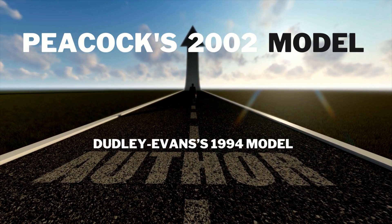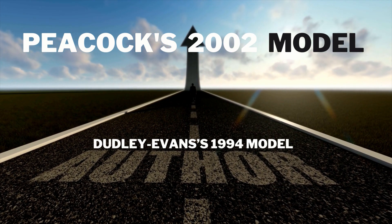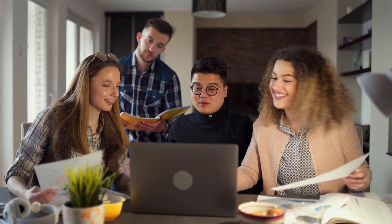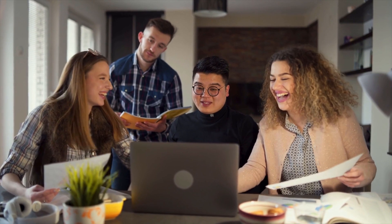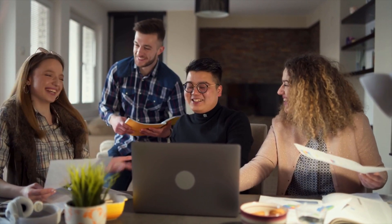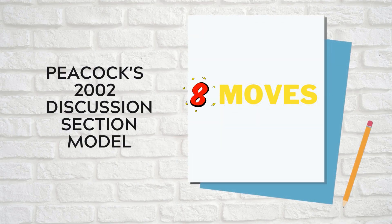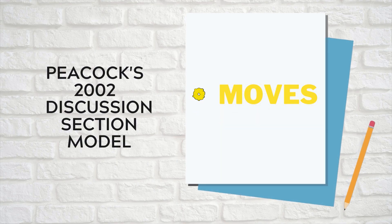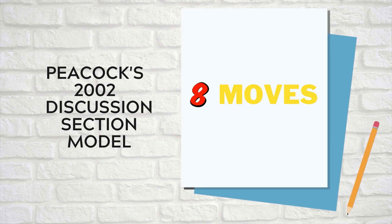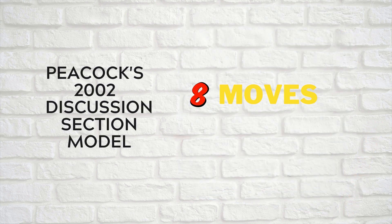With this growth has come the need to teach students discipline-specific aspects of research writing. Among these aspects are the conventions of research writing and, in particular, the communicative moves that writers need to make to develop their main points and argument. If there are three moves in the introduction section, the discussion section has eight moves.